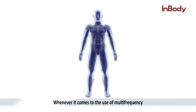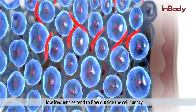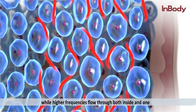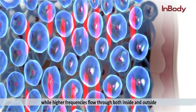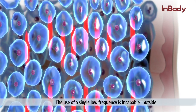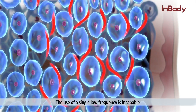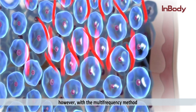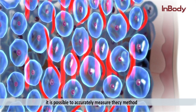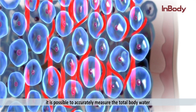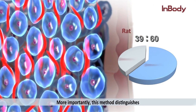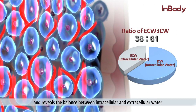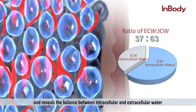When it comes to multi-frequency: low frequencies tend to flow outside the cell membrane, while higher frequencies flow through both inside and outside. The use of a single low frequency is incapable of determining the water inside the cell. However, with the multi-frequency method, it is possible to accurately measure the total body water. More importantly, this method distinguishes and reveals the balance between intracellular and extracellular water.